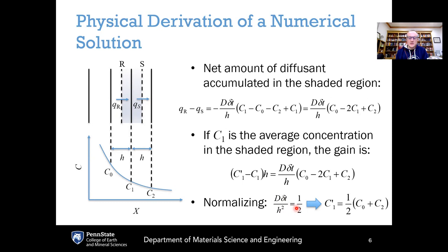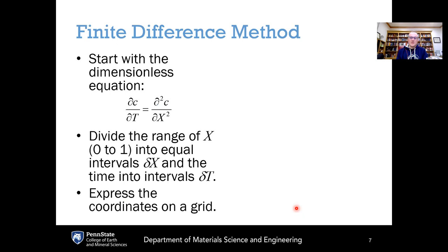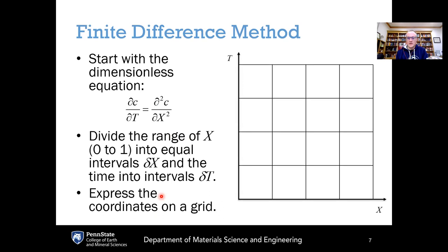That's the broad physical picture, but let's get into the mathematical details of the finite difference method. We start with our dimensionless diffusion equation after converting all coordinates to dimensionless form. We divide the normalized position space, which ranges from zero to one, into equal intervals denoted by delta x, and then equal normalized time intervals given by delta t. We express those coordinates on a grid, with position along the x-axis and time along the y-axis, where the x spacing is delta x and the time step is delta t.